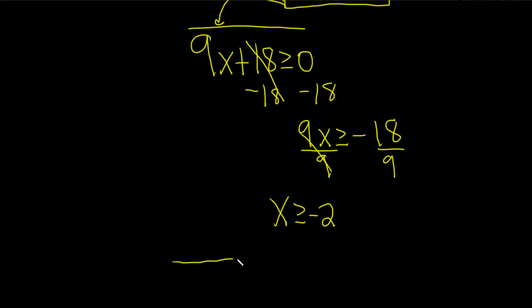And if you like, you can graph the solution set. So this is negative 2, and it's all the numbers bigger than negative 2, so it's all the numbers over here. And this has an equal to part. That means we're going to include the negative 2.